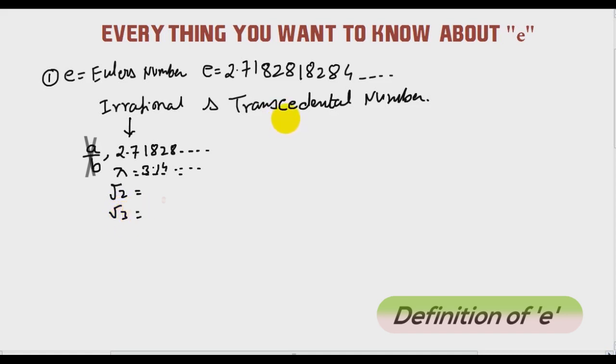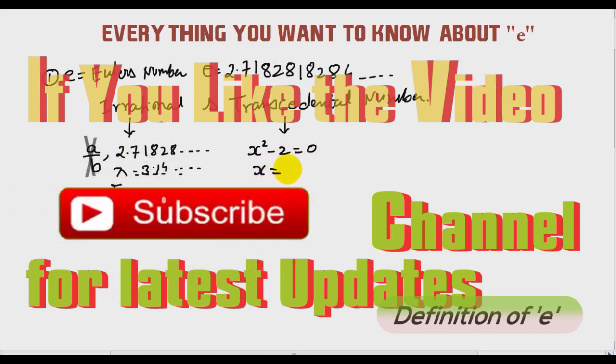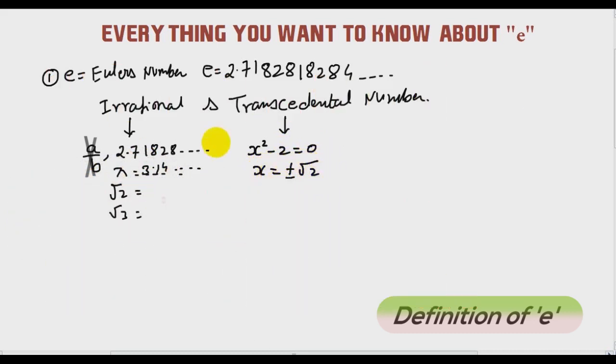But what is a transcendental number? A transcendental number is a real or complex number that is not algebraic. It is not a root of a non-zero polynomial equation with integer coefficients. In simple terms, transcendental numbers are those numbers for which I cannot write an equation and find the value, like x square minus 2 equal to 0, so x equal to plus minus root 2. So root 2 is an irrational number but not a transcendental number. I cannot write an equation and find the value of E. That is the general meaning of a transcendental number.